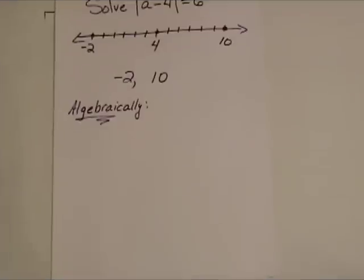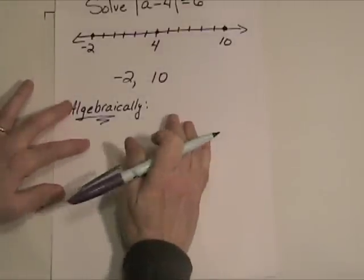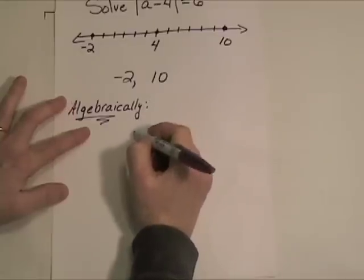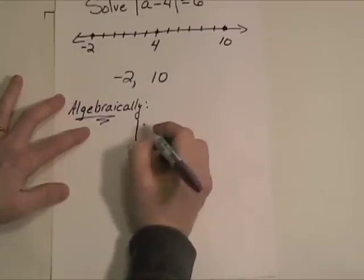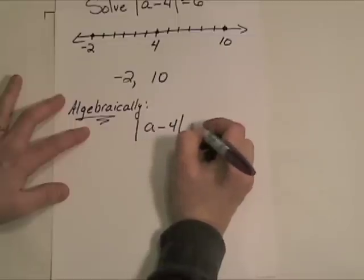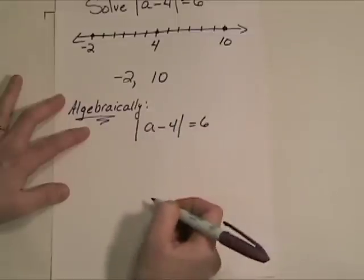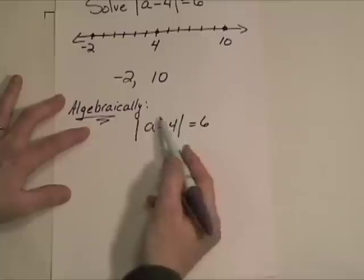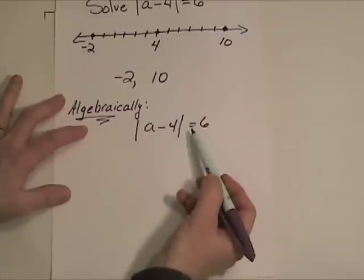Now we don't always have a sweet, cute little number line like that in front of us that we can very nicely just count jumps. So I need to also show you an algebraic way to solve this type of problem. And it's equally easy. Let's just take a look here. Once again, we have the challenge to solve A take away four is equal to six. Now, the absolute value of A take away four is equal to six.